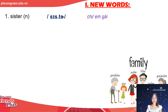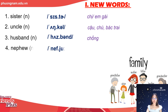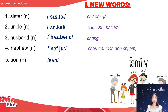Sister — in Vietnamese it means chị em gái. Number two: uncle — cậu, chú hoặc là bác trai. Number three: husband — chồng. Number four: nephew — cháu trai hoặc là con của anh chị em mình trong tiếng Việt. Number five: son — con trai.